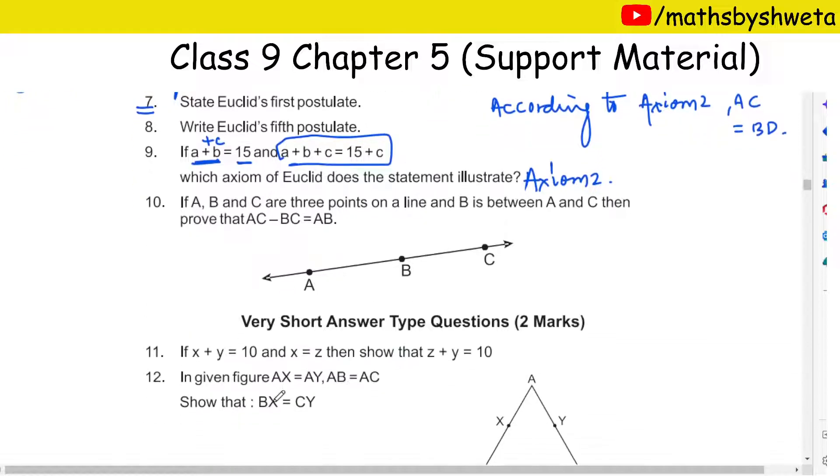If A, B, and C are three points on a line and B is between A and C, then prove that AC - BC = AB. So these are three points on a line with B between them. First of all, you know that AB + BC = AC.